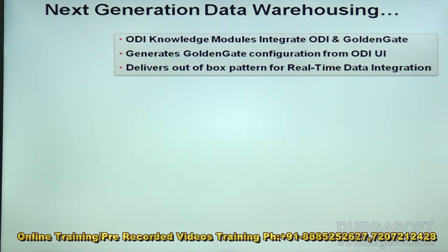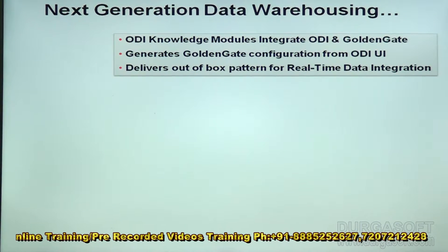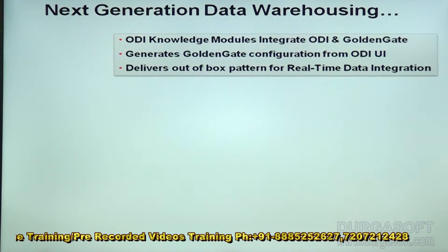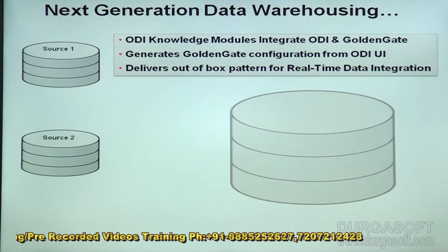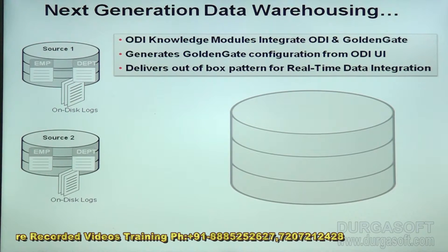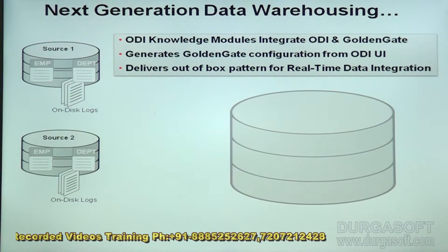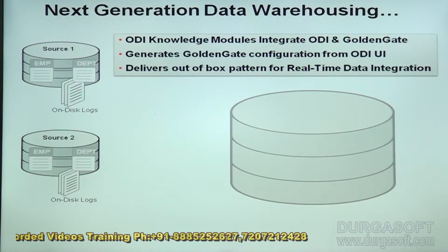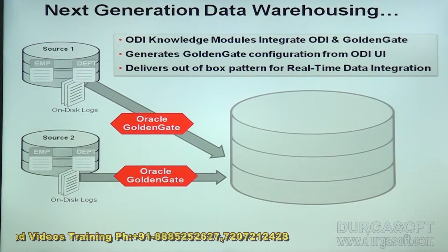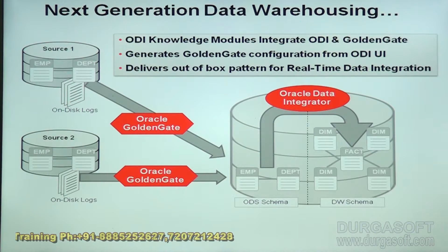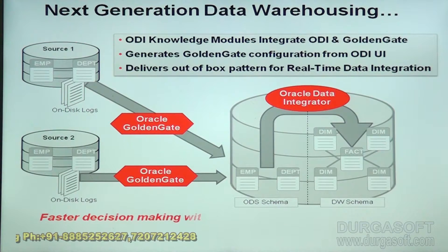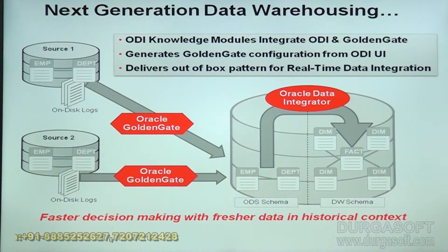Next-generation data web processing: ODI knowledge modules integrate ODI and GoldenGate. It generates GoldenGate configuration from the ODI UI and delivers out-of-box patterns for real-time data integration. You can see sources flowing to employee and departments schemas, Oracle GoldenGate in the middle, ODS schemas, and Oracle Data Warehouse schema.